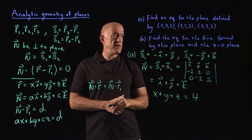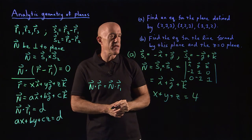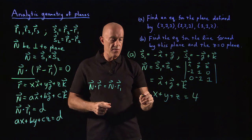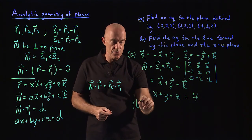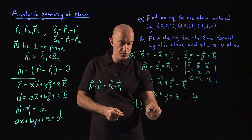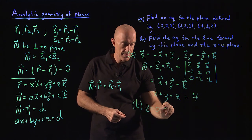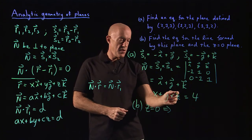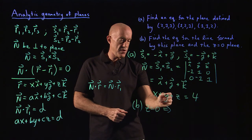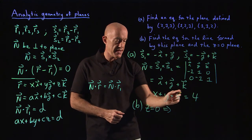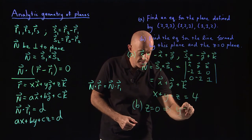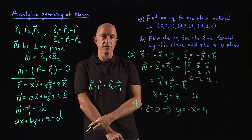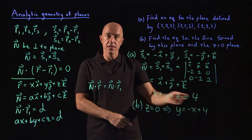For part b, find the equation for the line formed by this plane and the z equals 0 plane. All you have to do is take z equal to 0, and then we get y equals minus x plus 4. That's the intersection of those two planes, giving us a line.